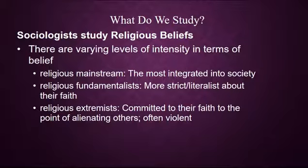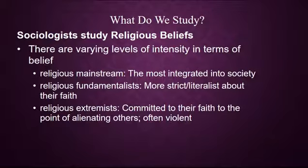And then we have religious extremists — people who are committed to their faith to the point of alienating others. They often started in fundamentalist communities and didn't think the fundamentalists were serious enough, then branched off into their own fringe extremist positions. These people's beliefs are often alienating to others and make it difficult for the outside world to interact with them. Religious extremists are sometimes violent, but just because you have people doing their own very different religious thing doesn't mean they will be violent. Violence comes from a very small piece of those who were extremists.